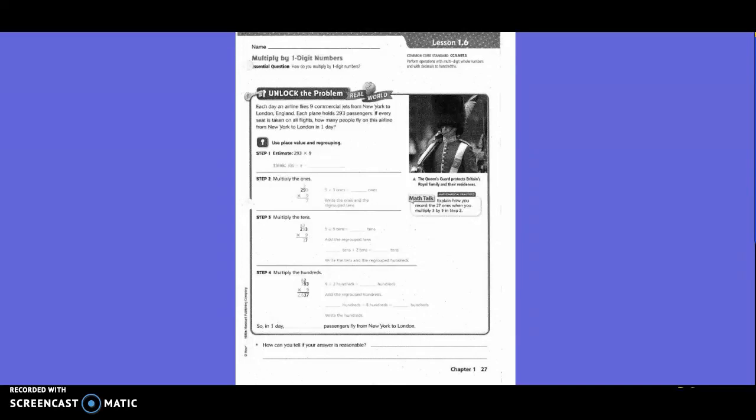Fifth grade chapter one, lesson six: Multiply by one-digit number. Unlock the problem. Each day an airline flies nine commercial jets from New York to London, England. Each plane holds 293 passengers. If every seat is taken on all flights, how many people fly on this airline from New York to London in one day?